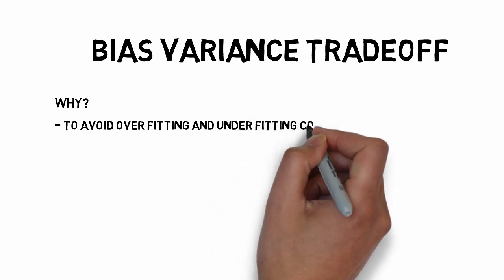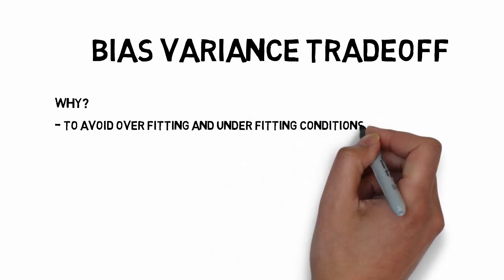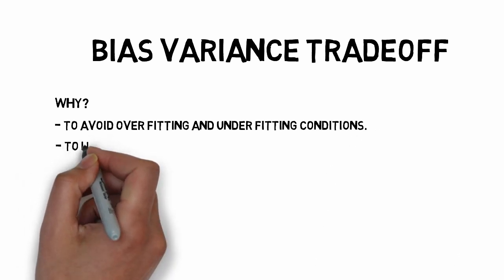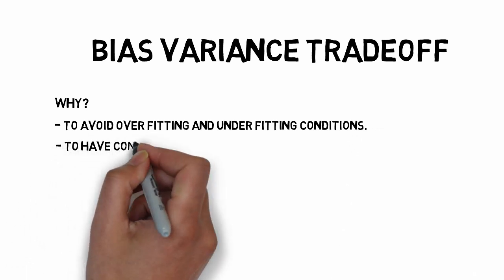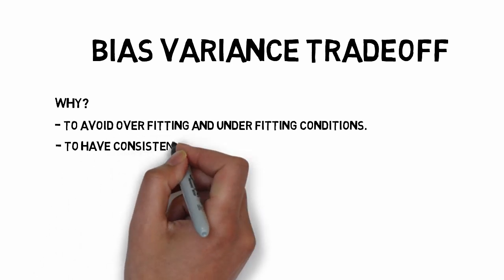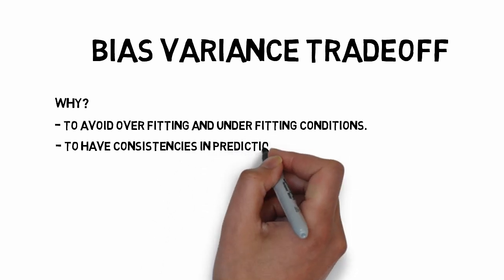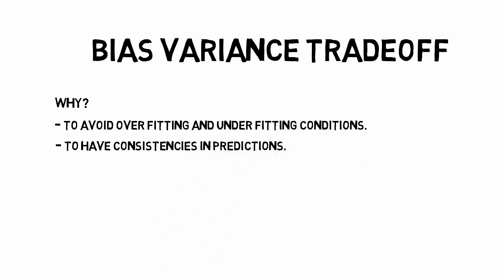You would want it to be consistent and have less errors in prediction and you would also want similar results when trained with similar data sets. Hence understanding of what bias and variance and their trade-off mean in a machine learning model is very important.